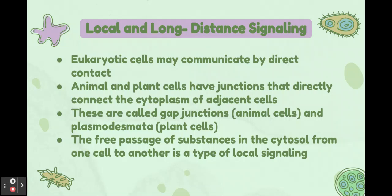In the cell we have local and long-distance signaling. Eukaryotic cells may communicate by direct contact. Animal and plant cells have junctions that directly connect the cytoplasm of adjacent cells. In animal cells these are called gap junctions, and in plant cells they are called plasmodesmata.